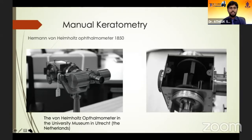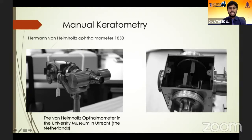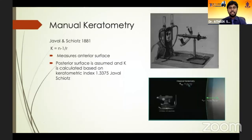A small history: the keratometer was invented by Hermann von Helmholtz. The first keratometer he invented is currently in the University Museum in Netherlands. It has two glass plates that can be rotated to measure the cornea at different meridians. Even so many years ago, it could measure the cornea at different meridians — unlike today's keratometers. However, it was very time-consuming.